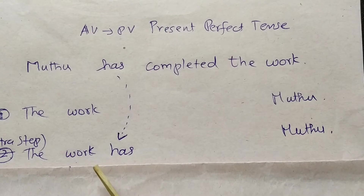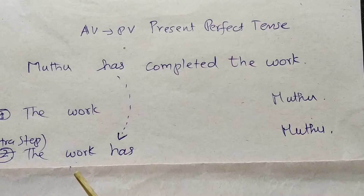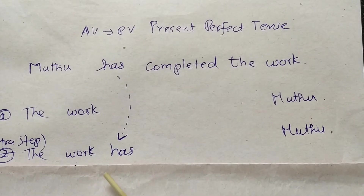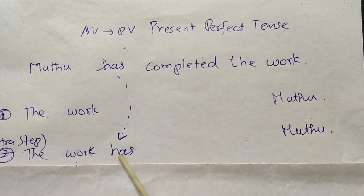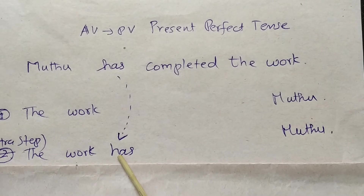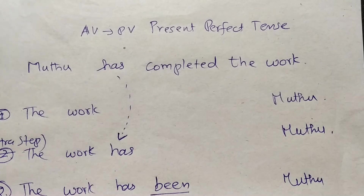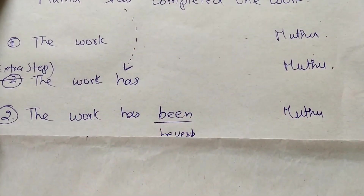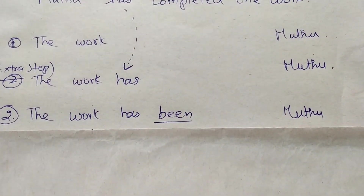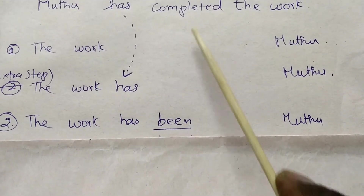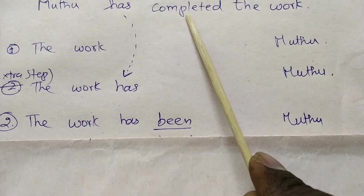For present perfect tense passive, 'has' comes below (under the verb). There are 4 steps. The first step: add the verb - here it is V3. 'Has' with V3 is the extra step in passive conversion.